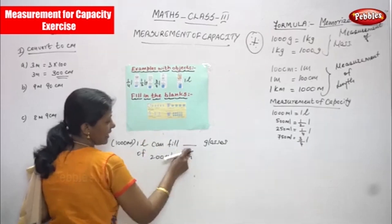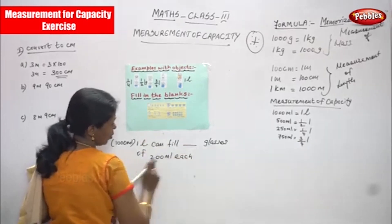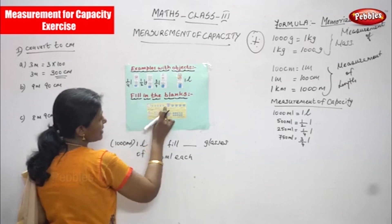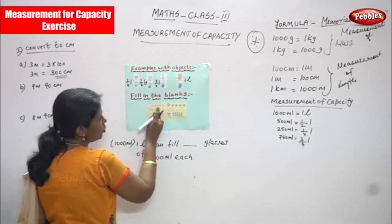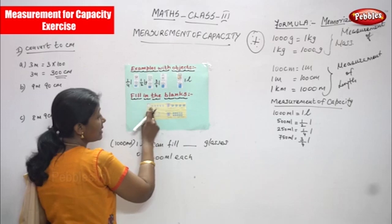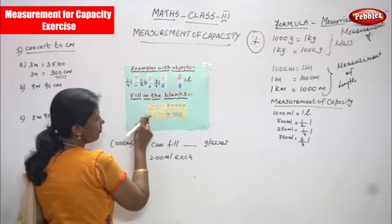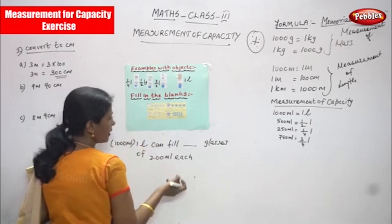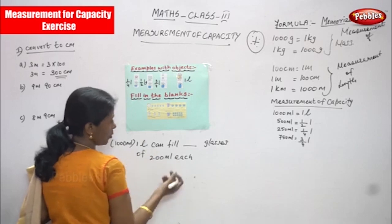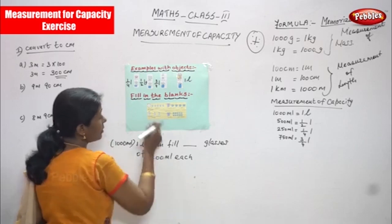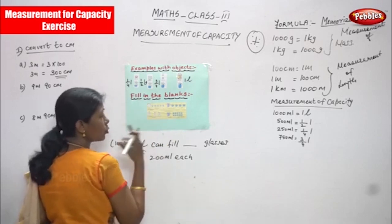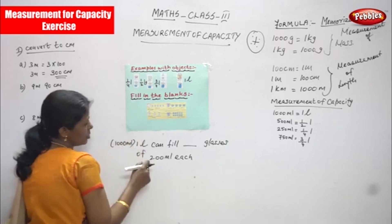It's a can — fill dash glasses of 200 ml each. So these each glasses: 1, 2, 3, 4, 5 glasses. These 5 glasses fill 200 ml of water or milk — anything you can take. 200 ml of water or 200 ml of milk each.